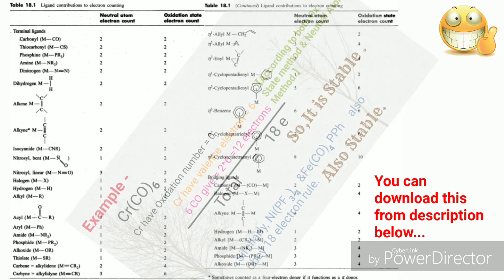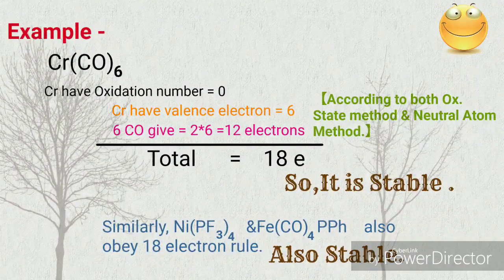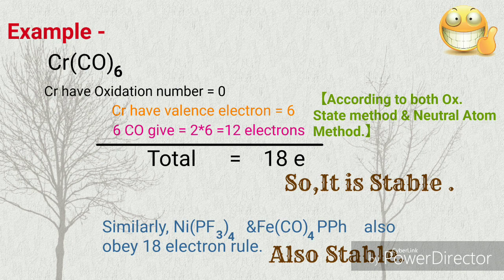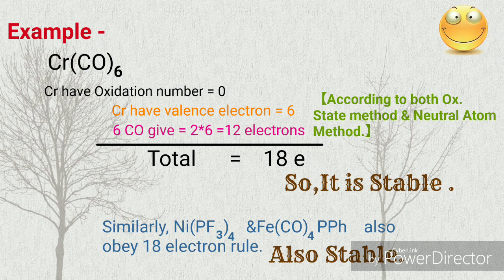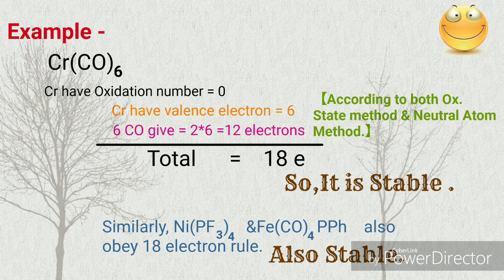Let's consider an example: Cr(CO)₆. Here Cr has oxidation number 0. Cr has valence electron 6. 6 CO give 2 × 6 equals 12 electrons. So there is a total of 18 electrons according to the neutral atom method and oxidation state method both.